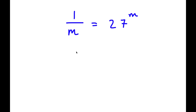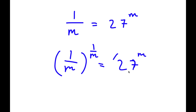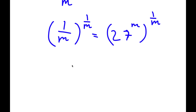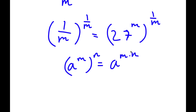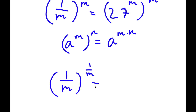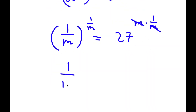In this problem, I have 1 over m is equal to 27 to the power of m. To solve this, I'm going to first start by taking both sides to the power of 1 over m. So I have 1 over m to the power of 1 over m is equal to 27 to the power of m to the power of 1 over m. Since a to the m to the n equals a to the m times n, this gives 27 to the power of m times 1 over m, and m times 1 over m cancels, leaving 27.